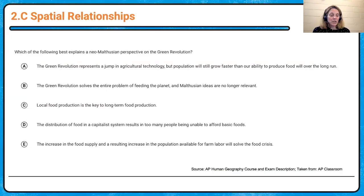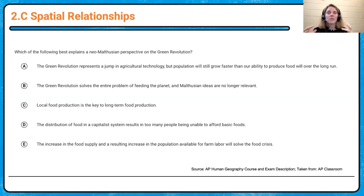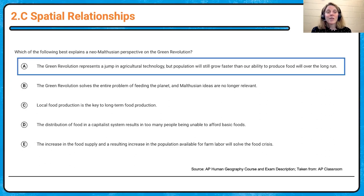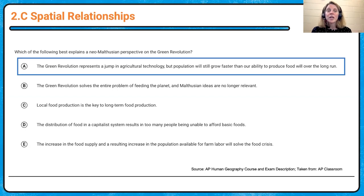For 2C — likely outcome — which best explains a Neo-Malthusian perspective of the Green Revolution? Malthus said population grows exponentially and food geometrically. Neo-Malthusians applying this to the Green Revolution of the 60s and 70s would say: the Green Revolution represents a jump in agricultural technology, but population will still grow faster than our ability to produce food over the long run. Many Neo-Malthusians today focus on resources or unequal distribution, and we can see areas where population is still growing faster than food production.